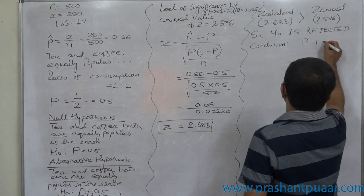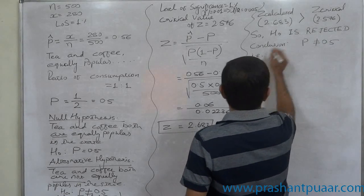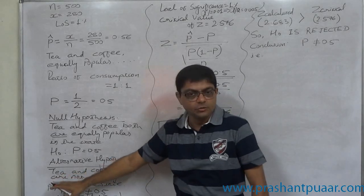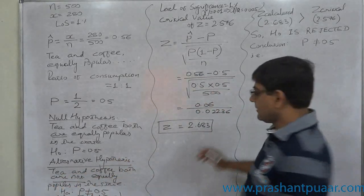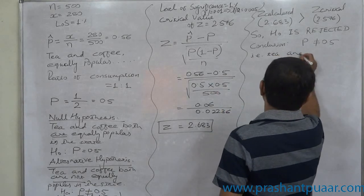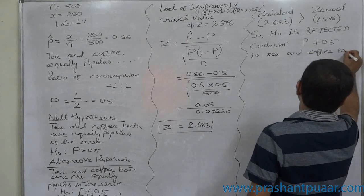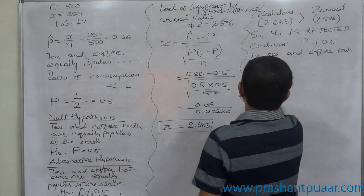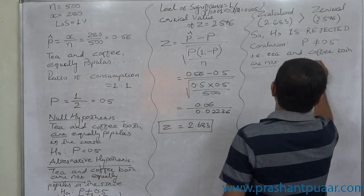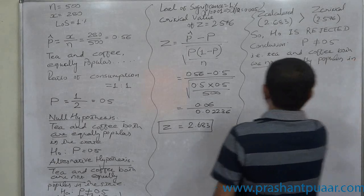Since capital P is not equal to 0.5 and the null hypothesis is rejected, we state the alternative hypothesis as our conclusion: tea and coffee are both not equally popular in the state.